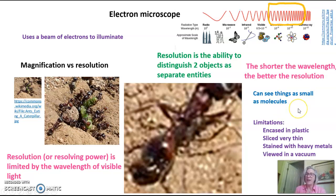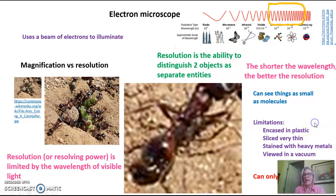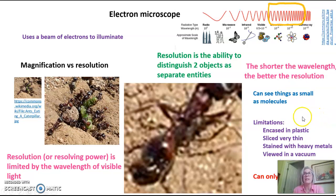The electron microscope does, however, have some very serious limitations. In order to see something in an electron microscope, the specimen first has to be encased in plastic, sliced incredibly thin, stained with heavy metals, and viewed in a vacuum. That means you can only view dead cells in the electron microscope. So if you want to watch a process as it's happening — a cell moving or dividing — you can't do that in an electron microscope because the cell is already dead.